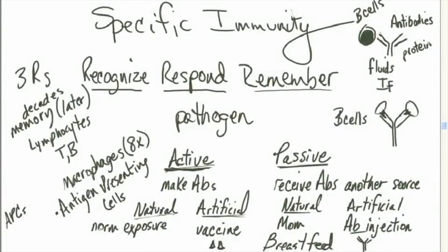Lymphocytes come in two main varieties: T lymphocytes and B lymphocytes. Macrophages get out into the tissues and they eat — phagocytosis. When we talk about specific immunity and macrophages, their most important role is their ability to function as antigen-presenting cells.